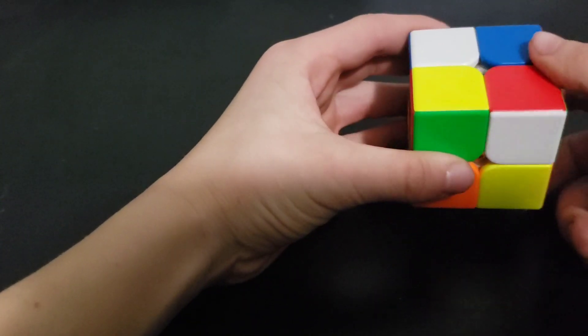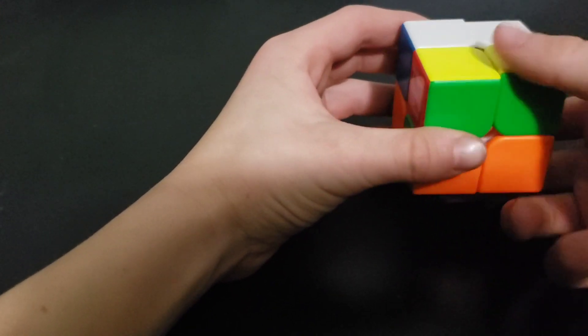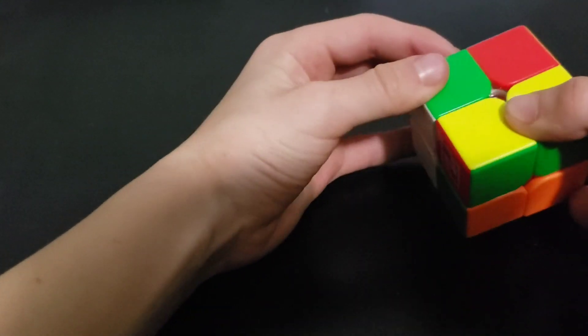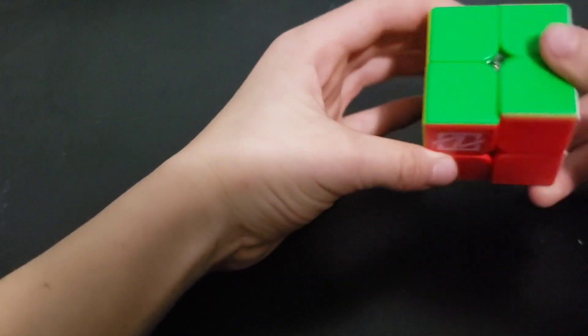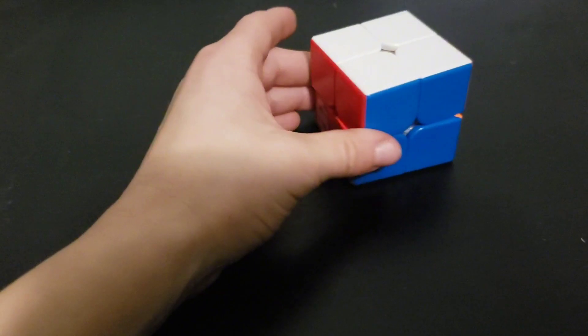The right side of the cube twice, the back side of the cube twice. And if you're right here, you can just do that and then your cube will be solved.